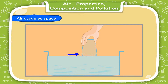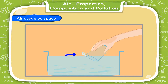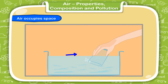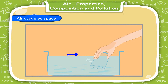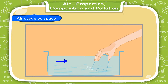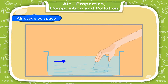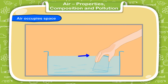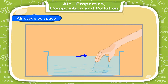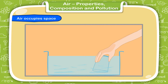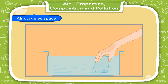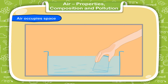This happens because air present in the glass is unable to come out, so water cannot enter the glass. Now, tilt the glass slowly in the water as shown here. You will see bubbles of air start coming out of the glass and water starts entering the glass. This happens because air comes out from the glass in the form of bubbles and allows water to enter the glass. This clearly shows that air occupies space.